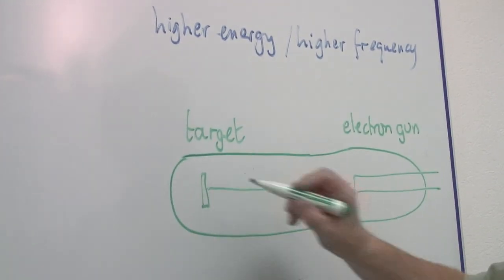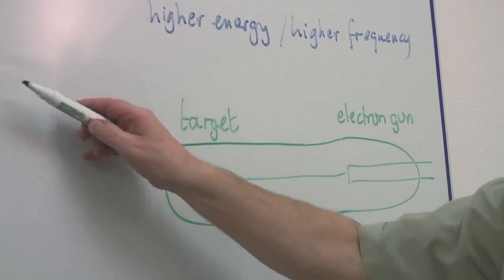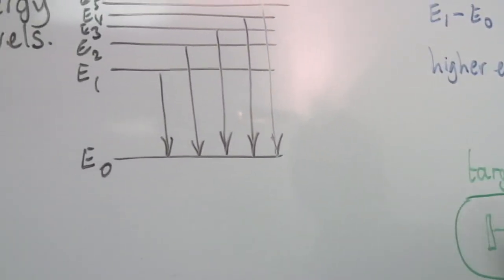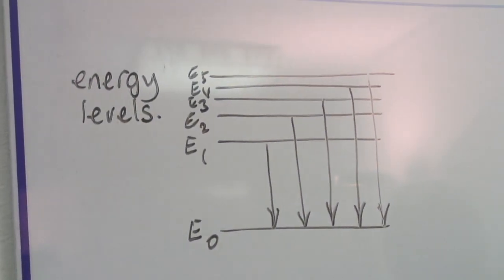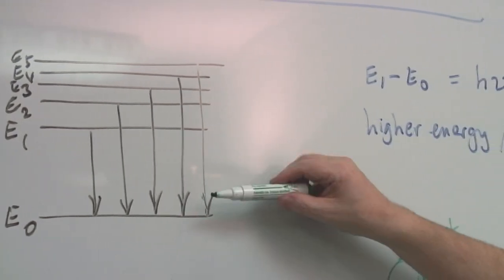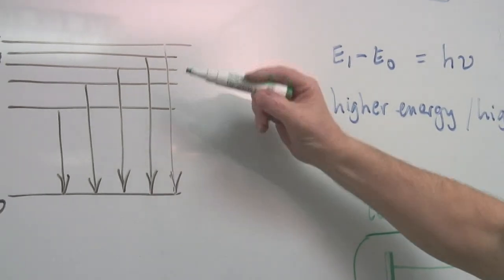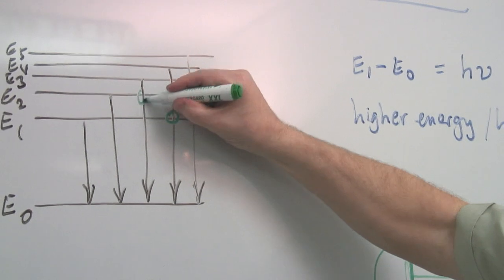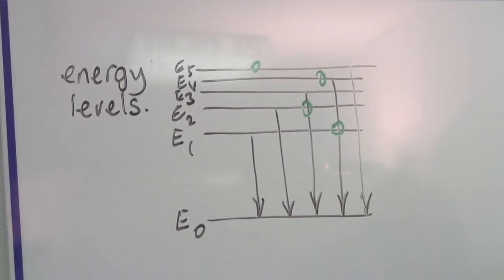And the target, when hit by these electrons, the electrons within the metal of the target, the metal surface of the target, these electrons are pushed into higher levels, like this. They're pushed up into the higher levels.